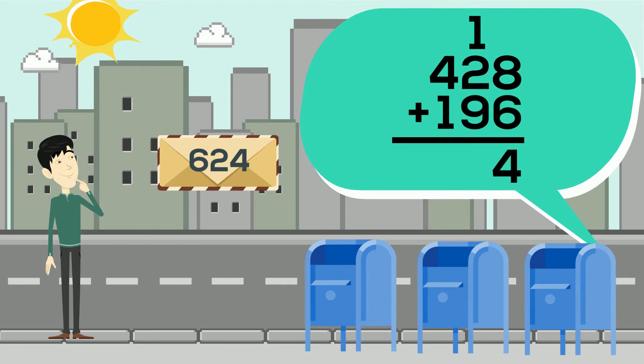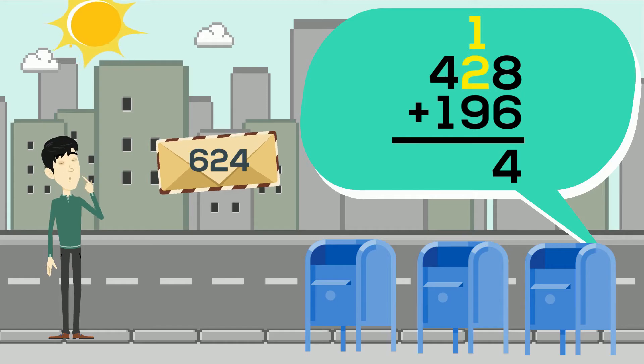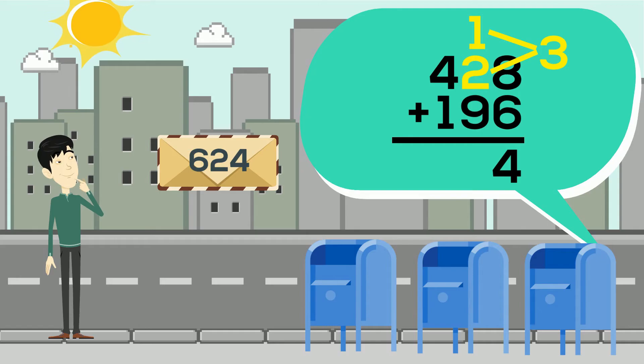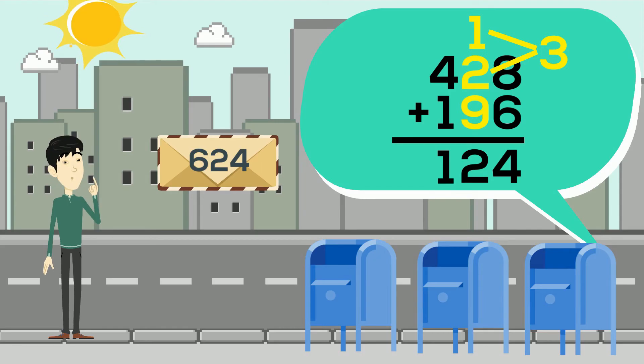Speaking of tens, let's move on to adding them. 1 plus 2 equals 3, and 3 plus 9 equals 12. Like before, we'll only write 2 below the tens, and place 1 above the hundreds column.